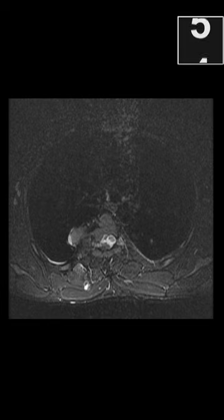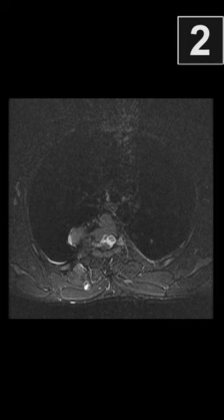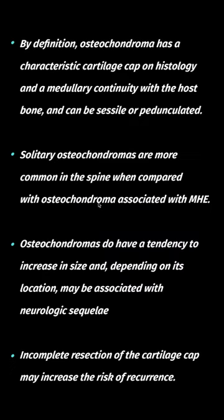A 36-year-old male patient presented with paraparesis. This is a case of spinal osteochondroma. By definition, osteochondroma has a characteristic cartilage cap on histology. Solitary osteochondromas are more common in the spine when compared to osteochondromas associated with multiple hereditary exostoses.